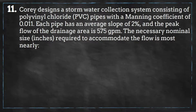Cory designs a stormwater collection system consisting of polyvinyl chloride pipes with a Manning coefficient of 0.011. Each pipe has an average slope of 2% and the peak flow of the drainage area is 575 gallons per minute.